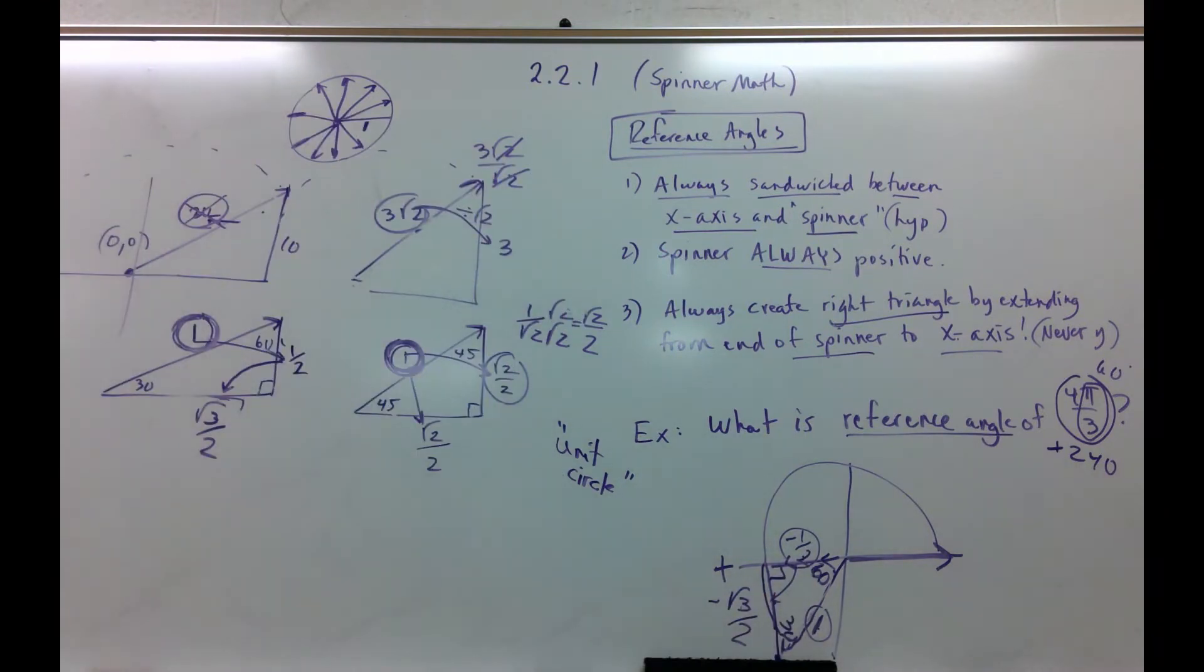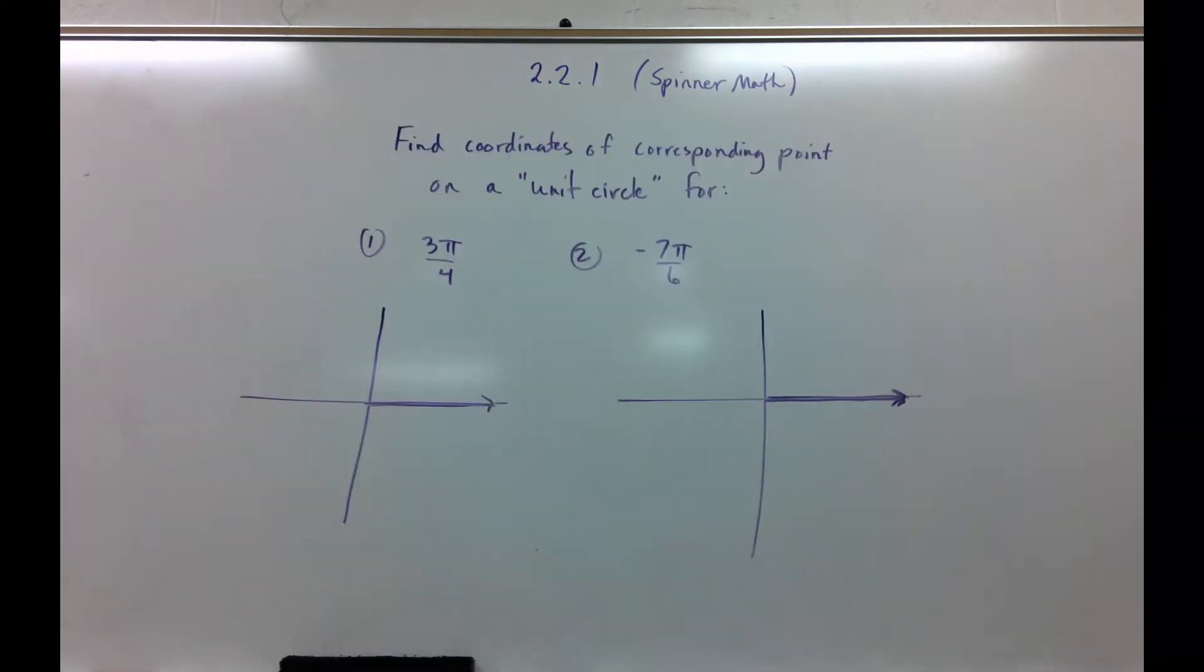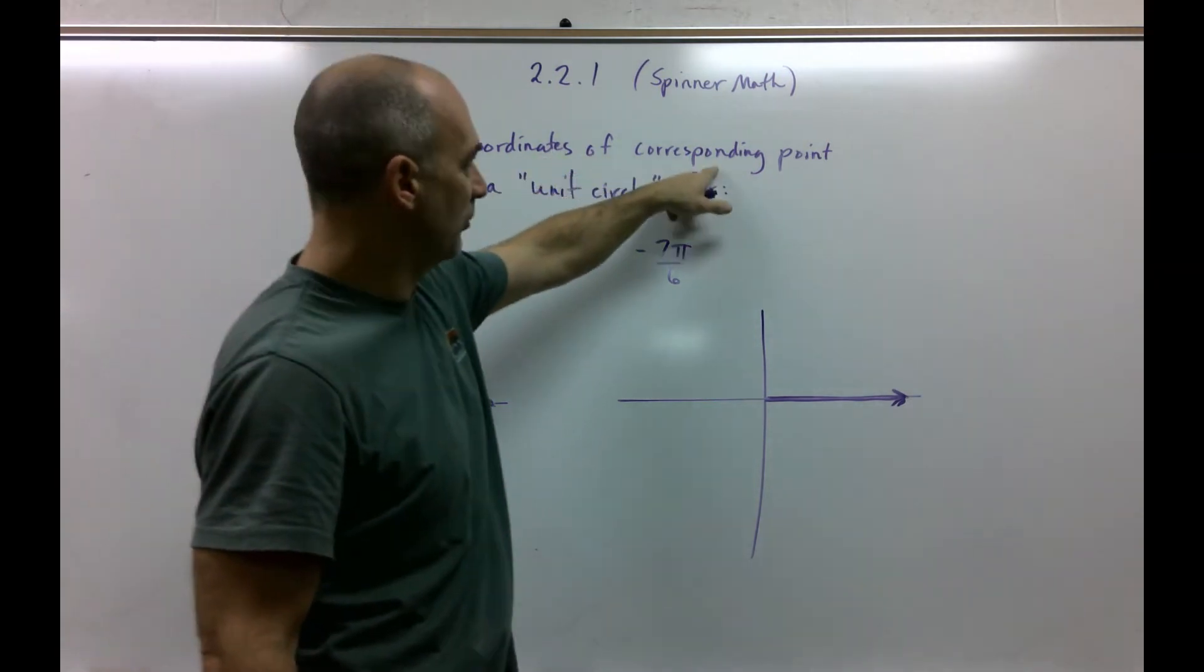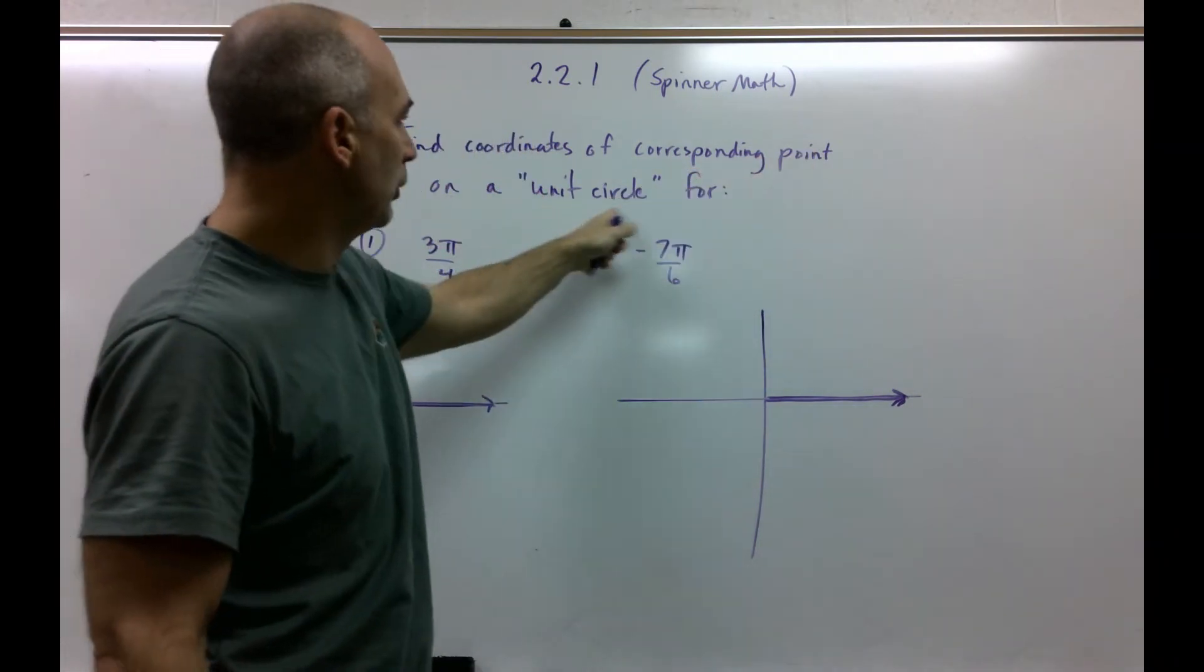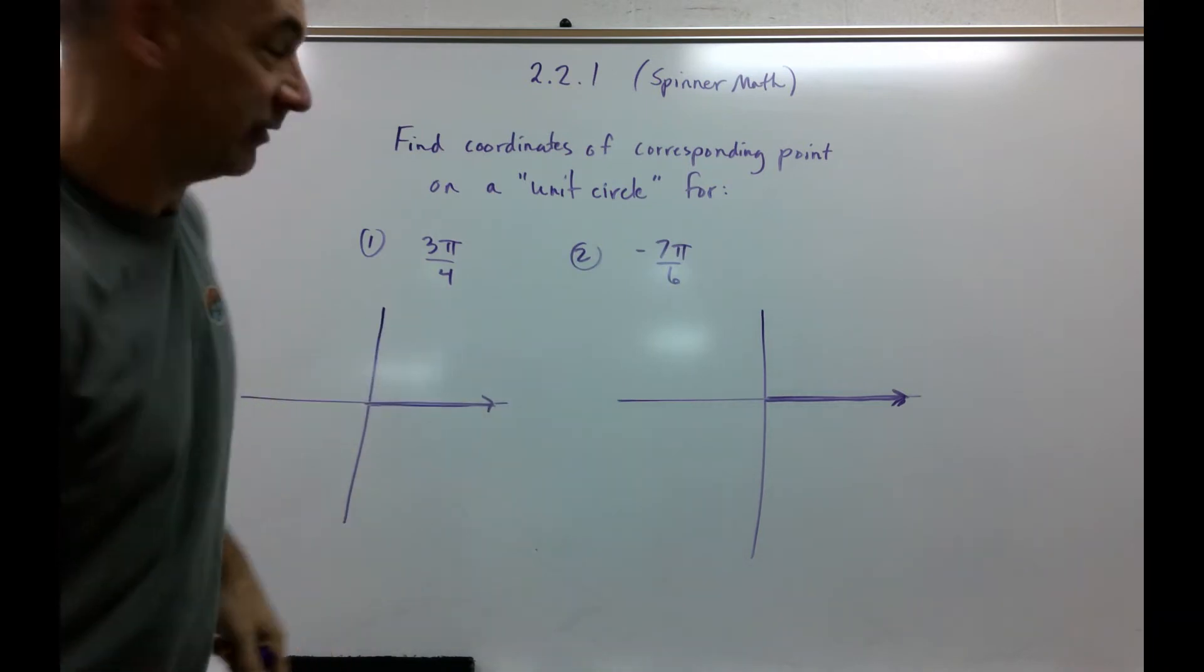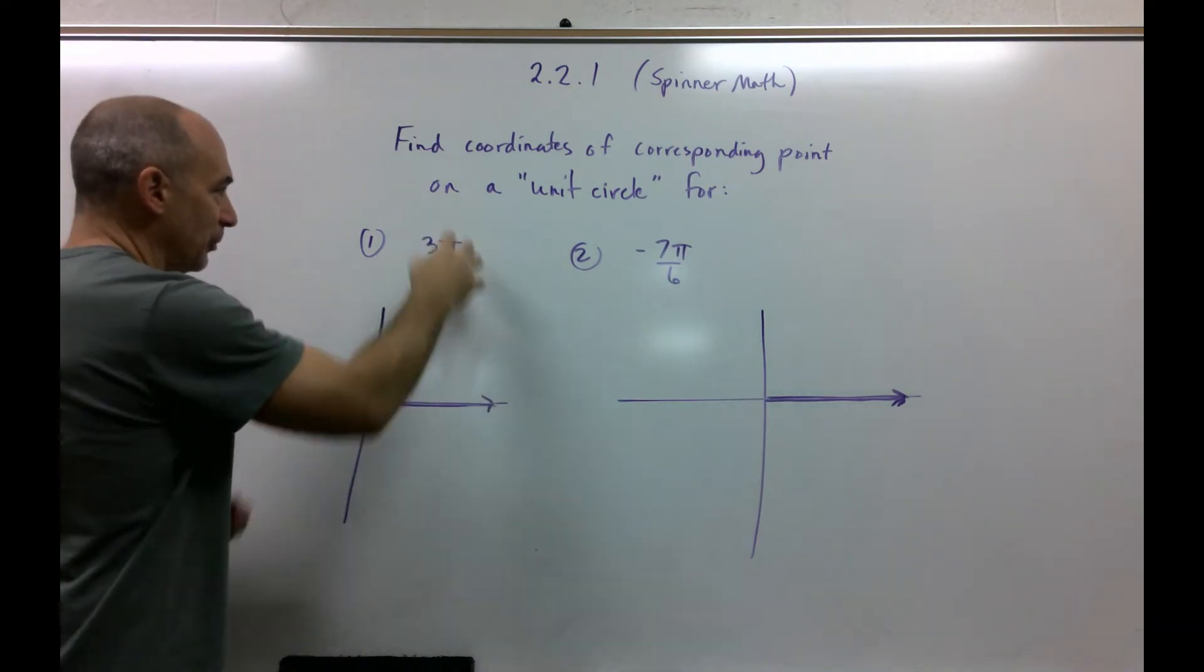So I've got to pause this a second. Alright, so you see a couple of examples on the board here. Look at the instructions. Find the coordinates of the corresponding point on a unit circle for... Here's your first example. This is just telling you how far to spin your spinner.